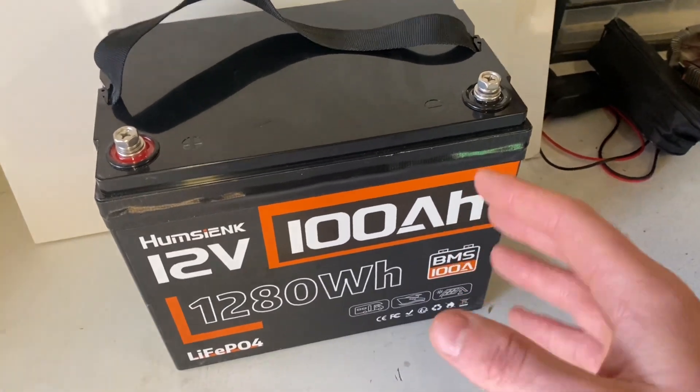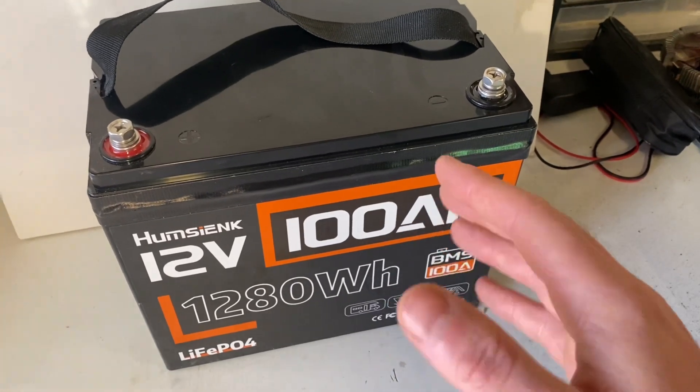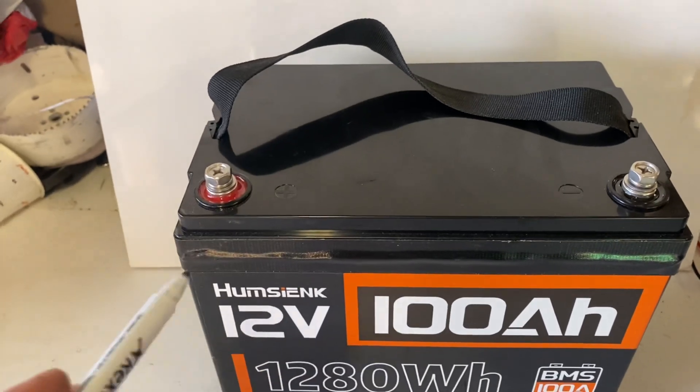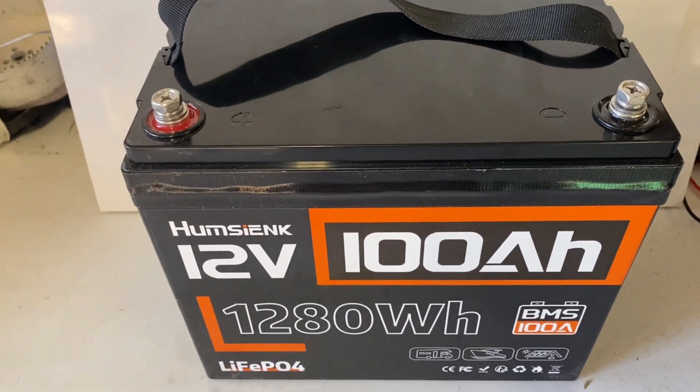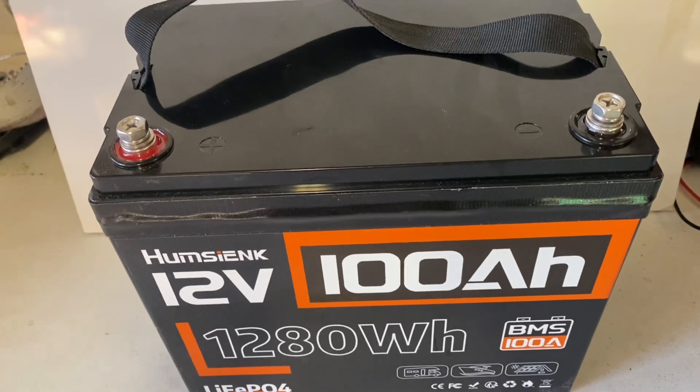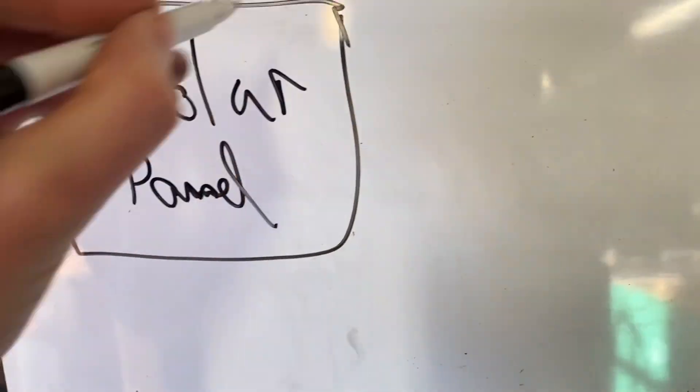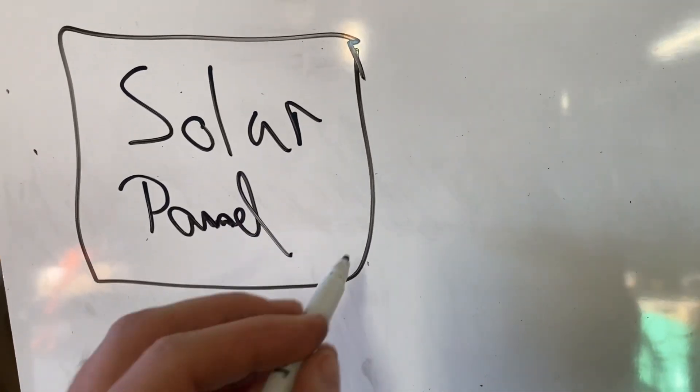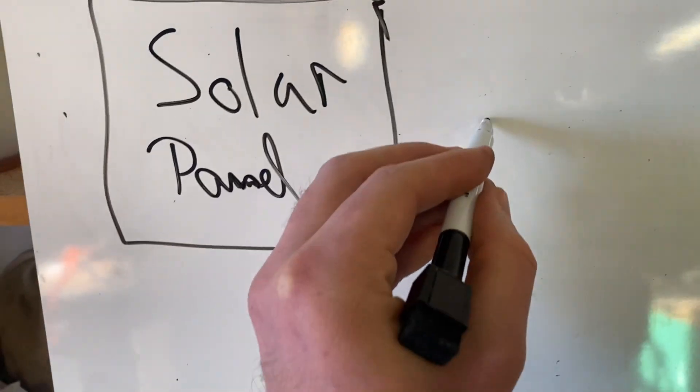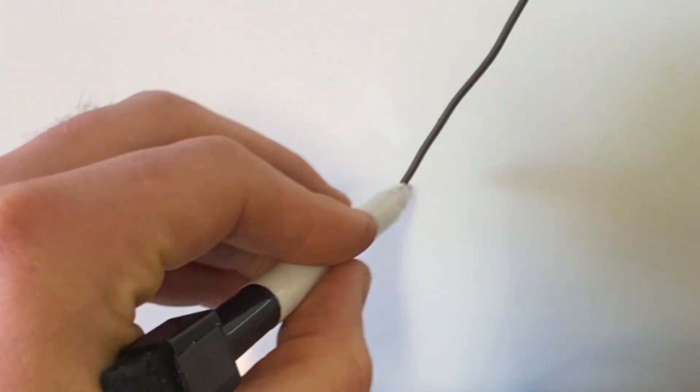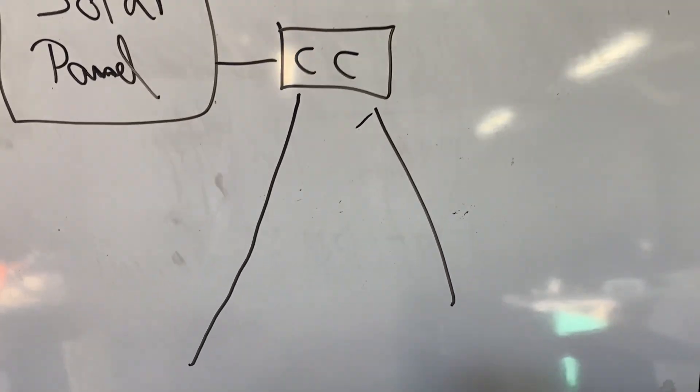There are different ways you can charge your lithium iron phosphate battery. Great shocker coming from this channel is solar. You've got your solar panel, or plural, going into a charge controller and into your positive and negative terminals.